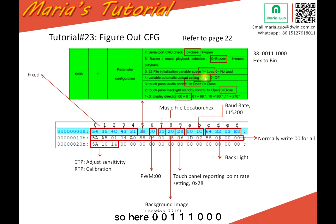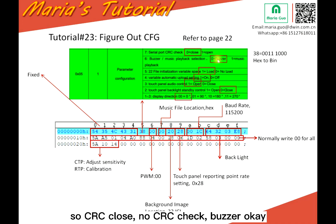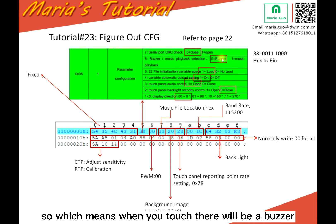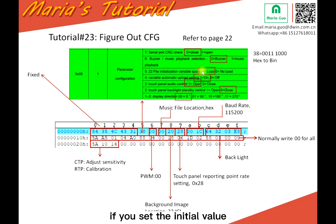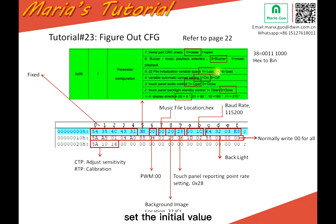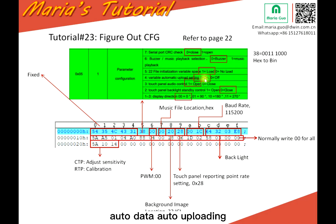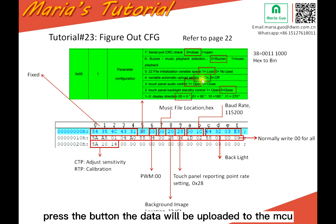So here, 00111000. CRC close means no CRC check. Border — okay, so which means when you touch, there will be a border sound. And this file initialization variable space means when you download the project to the display: if you set the initial value, it will show up in the display. But if you select zero, even though you set the initial value, it won't show up in the display. And this is the variable automatic upload setting — if you select one, when you select auto data, auto uploading is enabled in the project. So it means when you press the button, the data will be uploaded to the MCU.